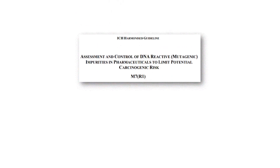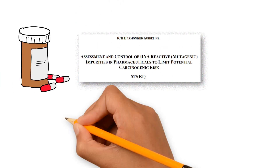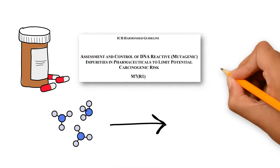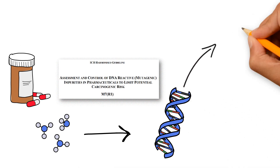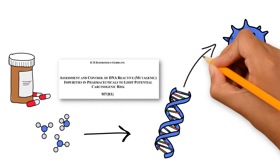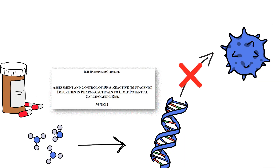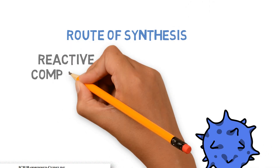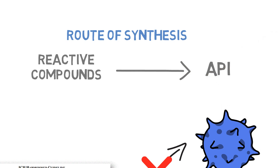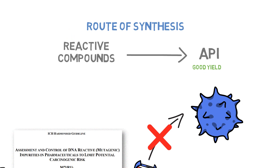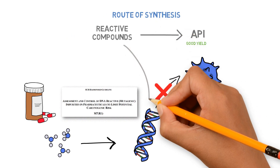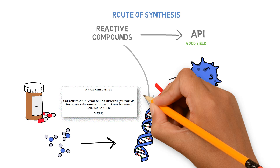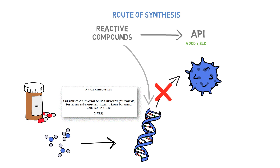ICH M7 is the guideline that established the risk assessment for mutagenic impurities in drug products to limit the potential for carcinogenic risk. The presence of mutagenic impurities is expected in any route of synthesis because we need reactive compounds to synthesize the API with good yields. Usually, these same compounds which are reactive in the synthesis can also be reactive with the DNA, causing mutations which can lead to cancer.